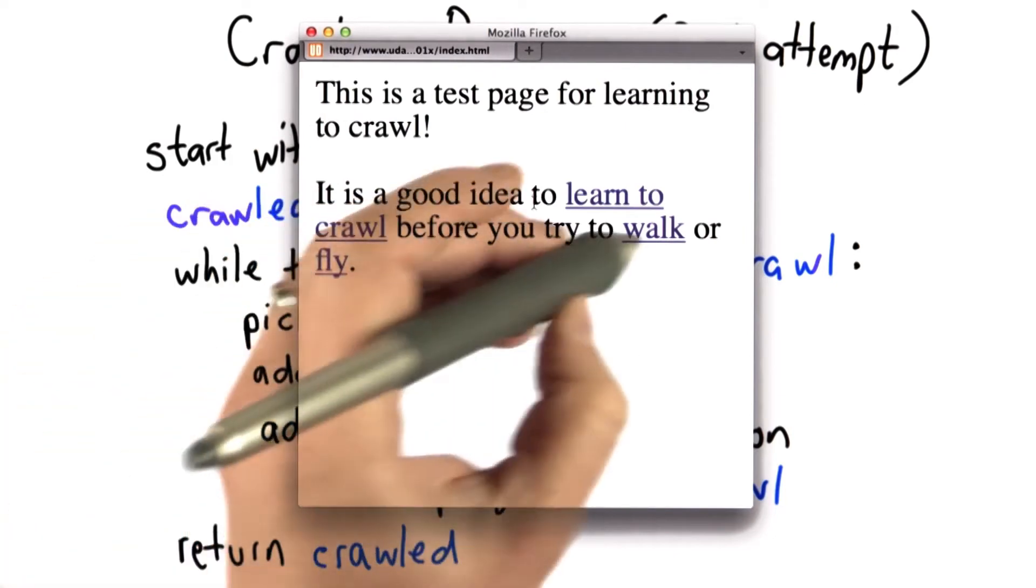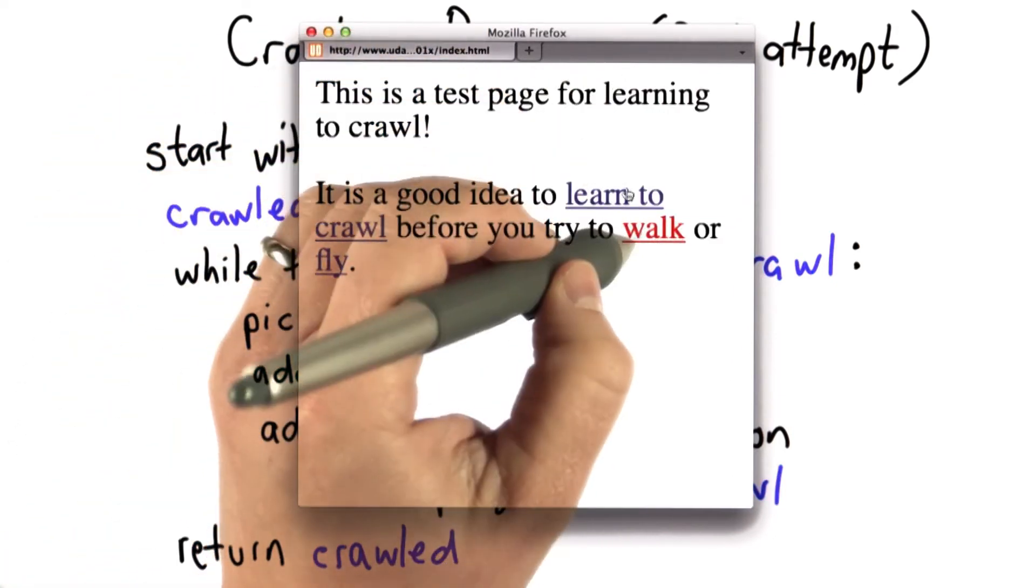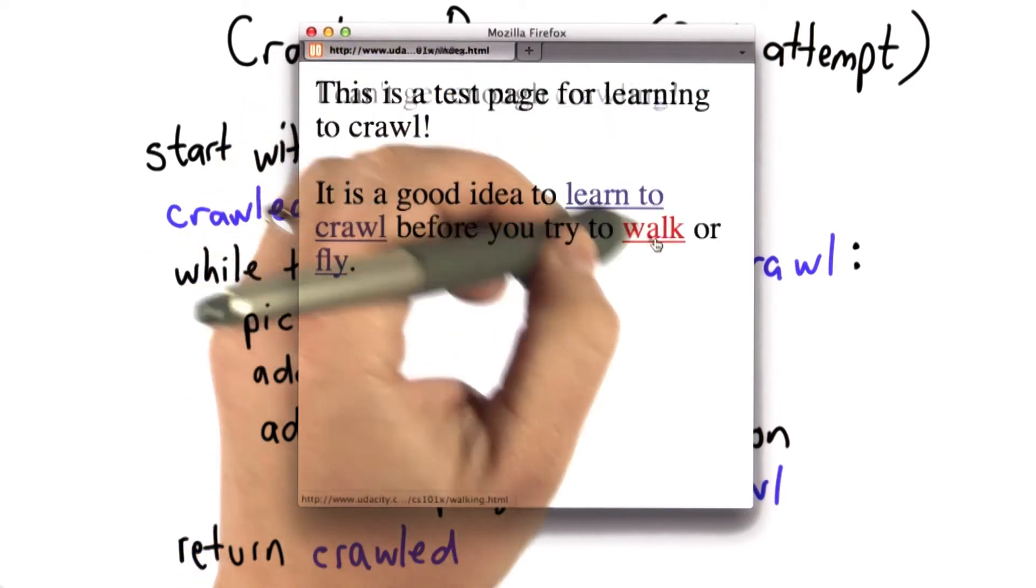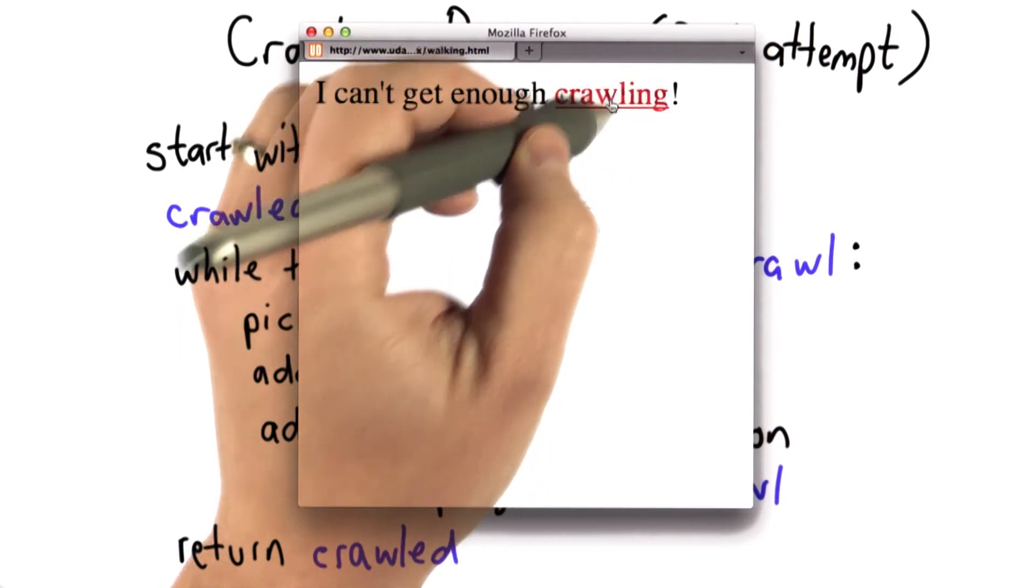That will keep going, and you're going to follow the walking link again, follow the crawling link again, following the walking link, following the crawling link back to the index, and this will continue forever. The crawler will never finish because it will always find a link to crawl.